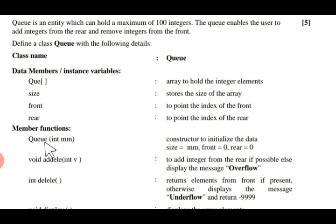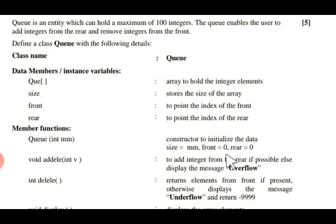The first member function is the constructor Q(int mm), to initialize the data: size = num, front = 0, and rear = 0. Note that usually we take front = -1 and rear = -1, but in this question paper front and rear are initialized to zero. After that, void addEle(int v) is the function which adds the value to the queue from the rear, if possible, else displays the message overflow.